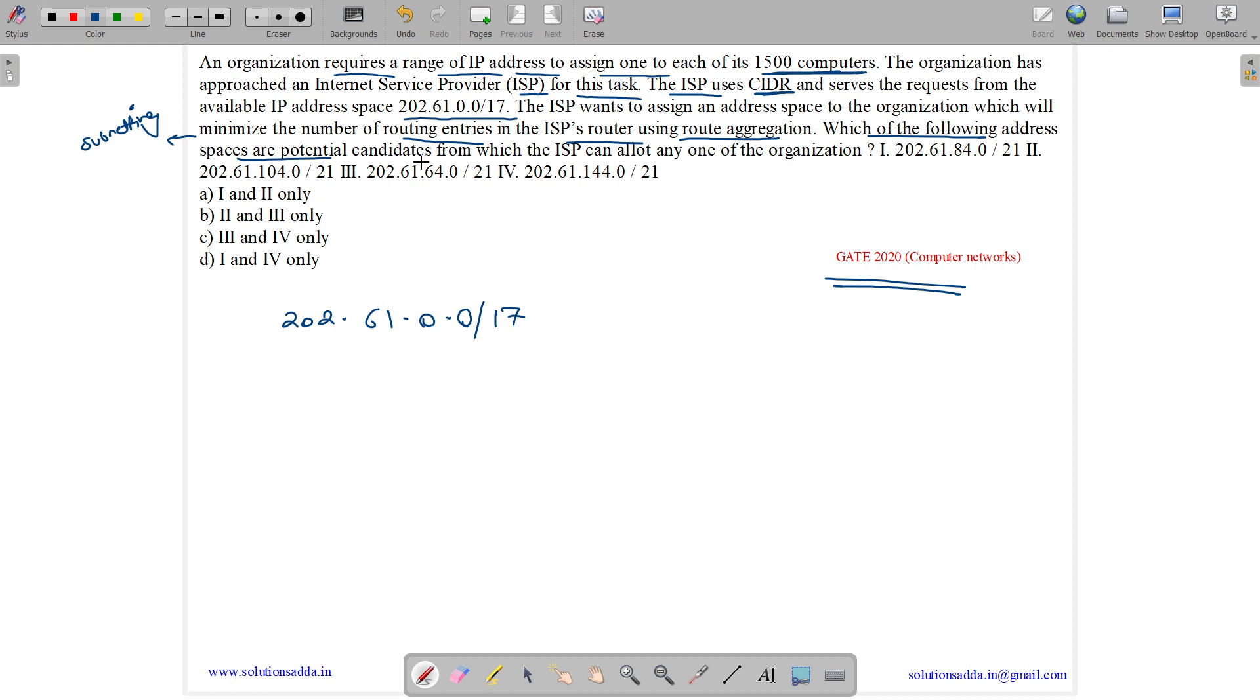Which of the following address spaces are potential candidates from which the ISP can allow any one of the organization? So we have the following options.